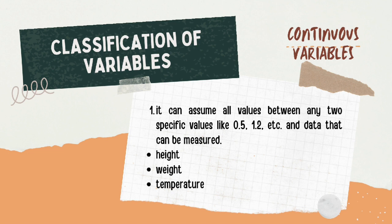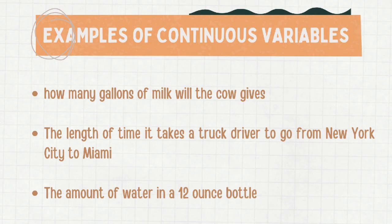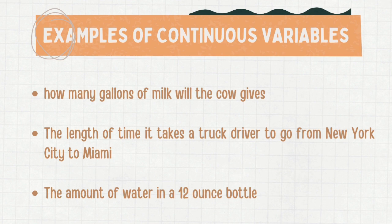Next are the continuous variables. These can assume all values between any two specific values, like 0.5, 1.2, and so on — data that can be measured. For example, height, weight, and temperature. Examples include how many gallons of milk a cow will give, the length of time it takes a truck driver to go from New York City to Miami, and the amount of water in a 12-ounce bottle. In these examples, we cannot precisely identify an exact countable number.